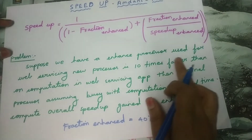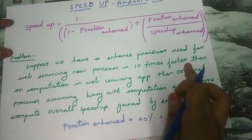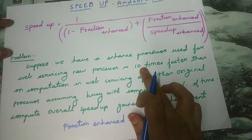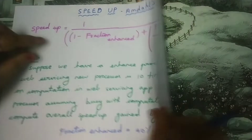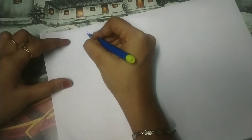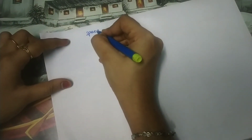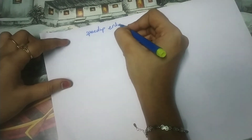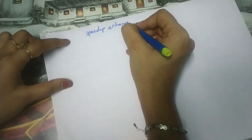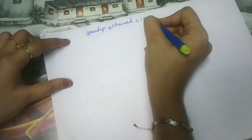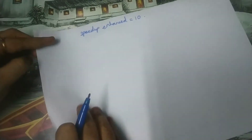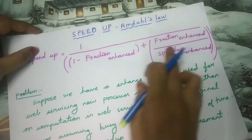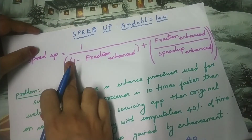The other value is speed-up enhanced, which is 10 times faster. The word 'faster' indicates it is a speed-up value. So speed-up enhanced is equal to 10.